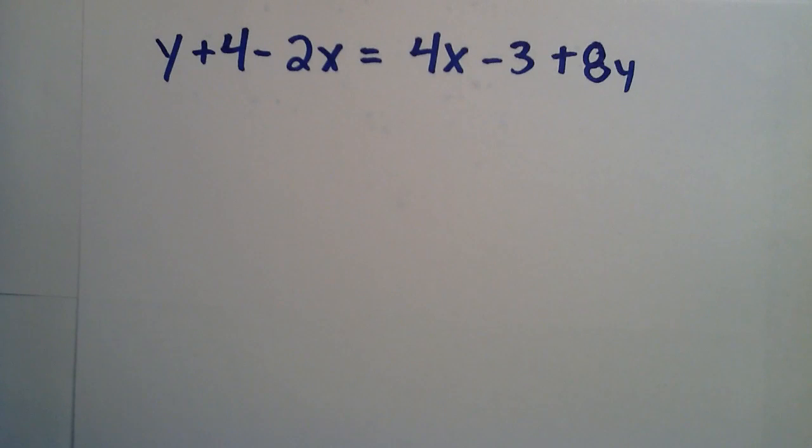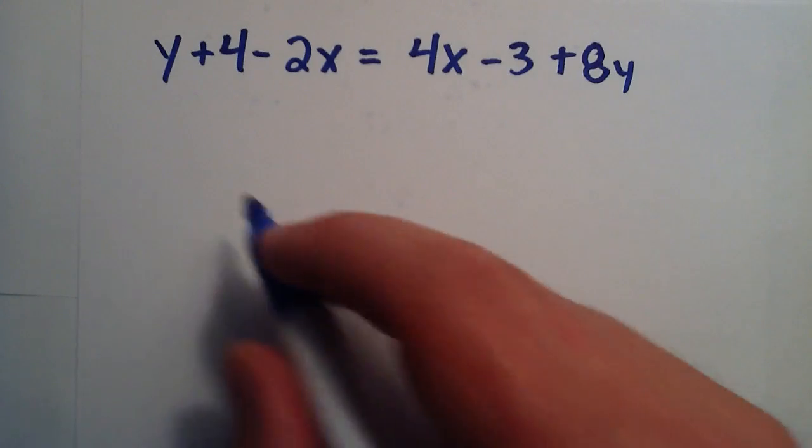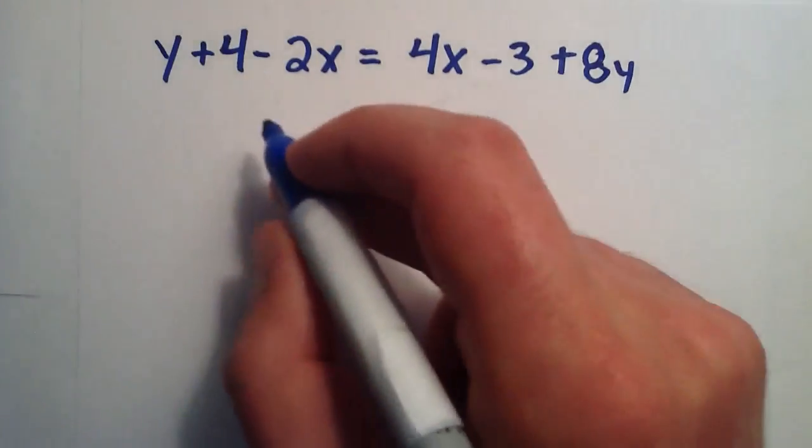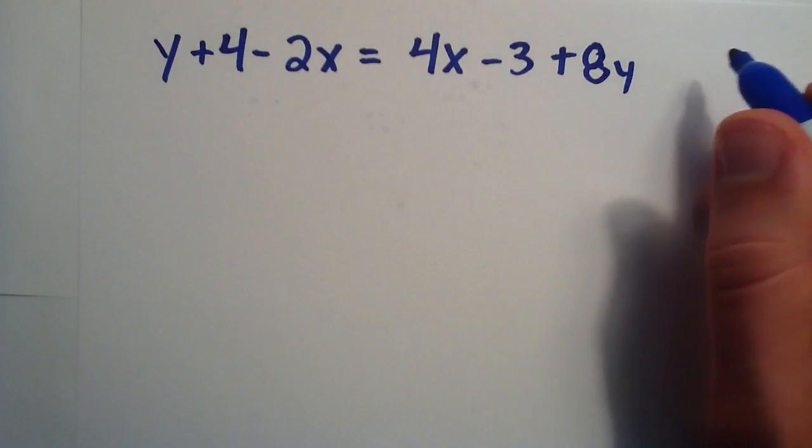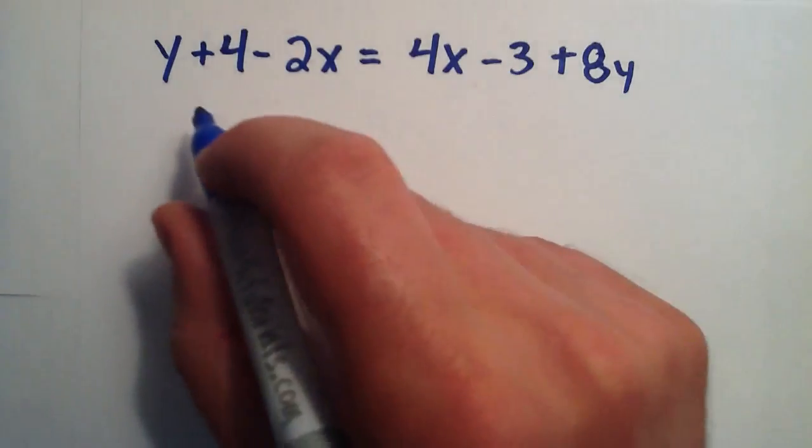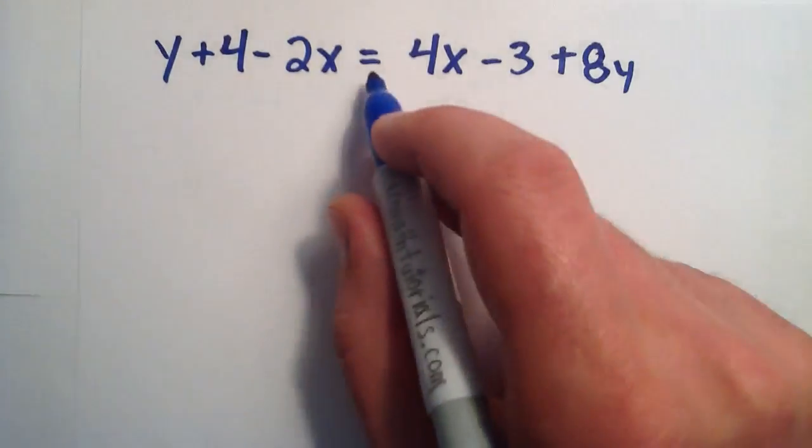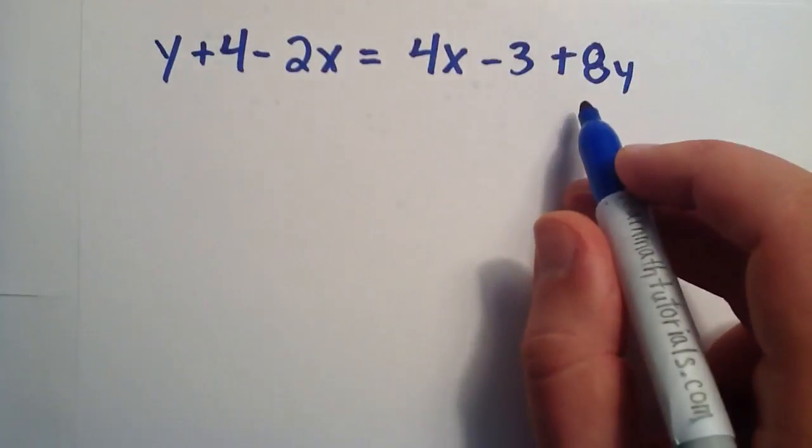Today I'll be showing you how to write one variable in terms of another. So here we have an equation of a line, and if you can't tell this is an equation of a line, don't worry about it. I'll get to that in a later tutorial. But basically we want to rewrite this as y equals some combination of everything else.